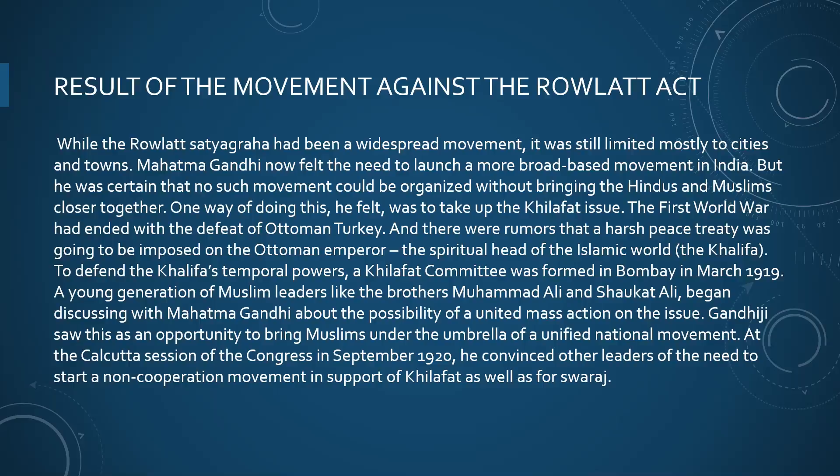One way of doing so, he realized, was to take up the Khilafat issue. After the end of the First World War, Ottoman Turkey was defeated and there were rumors that a harsh peace treaty would be imposed on the Ottoman Emperor — the Khalifa, the spiritual head of the Islamic world. To defend the Khalifa's powers, the Khilafat movement was formed in Bombay in March 1919, where young Muslim leaders like the Ali brothers, Muhammad Ali and Shaukat Ali, began discussing with Gandhi about the possibility of united mass action by both Hindus, Muslims, and other religious communities on this issue.